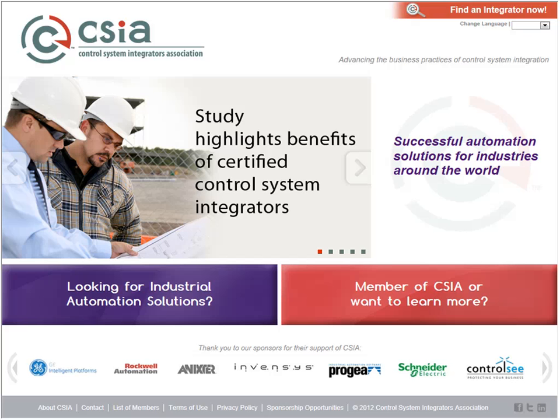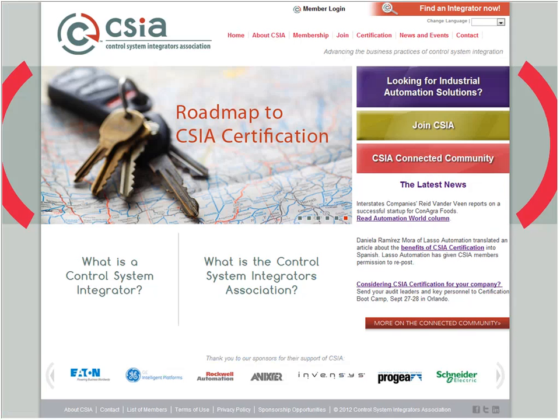I'm going to jump back now to the homepage of the new public website. The red door here takes us into the integrator side. This is the side where we speak directly to either our current members or to our prospective members. This is where more of the traditional association website information appears. Again, we have a rotating feature and some static content that helps people understand what a Control System Integrator does. We know that people don't always enter a website through the front door, so we've used graphics and buttons that would at any point take you back to the place you should be.